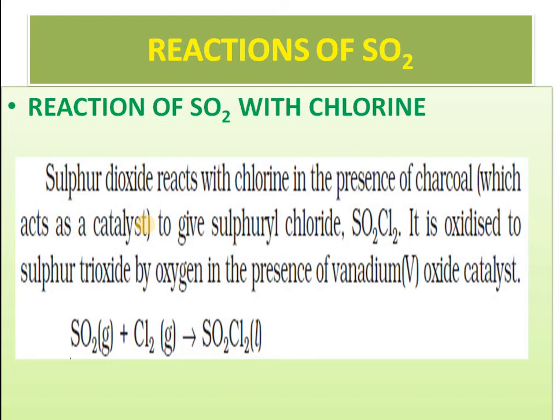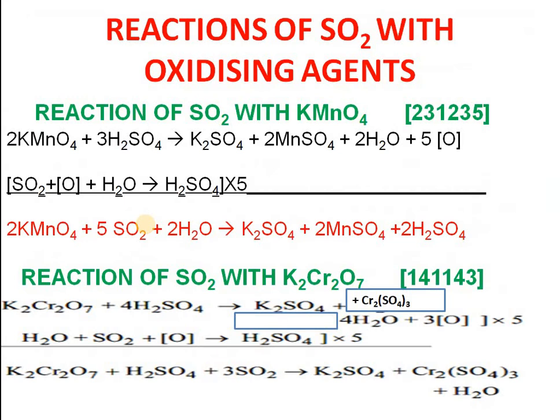The reaction of SO₂ with oxygen over V₂O₅ is the main reaction in the contact process for preparation of sulfuric acid. To remember the reaction of sulfur dioxide with KMnO₄, use this method: first, remember that KMnO₄ plus H₂SO₄ gives K₂SO₄, MnSO₄, water, and oxygen — with the coefficients 2, 3, 1, 2, 3, 5. Then remember that SO₂ on oxidation gives SO₃, and SO₃ with water gives H₂SO₄.